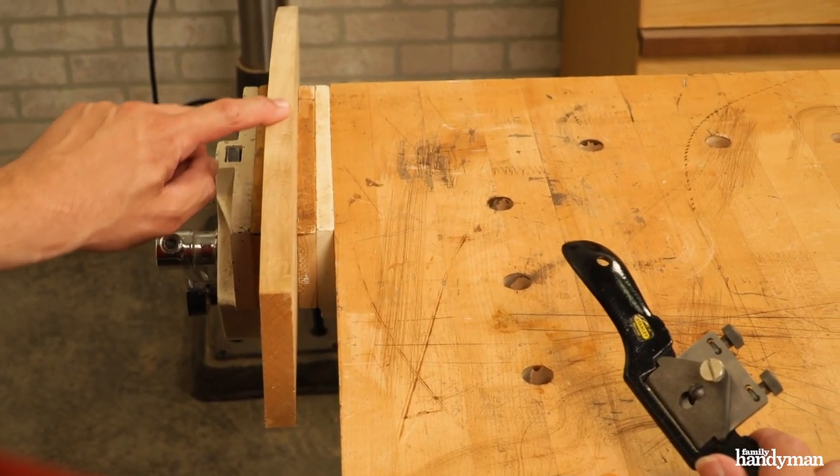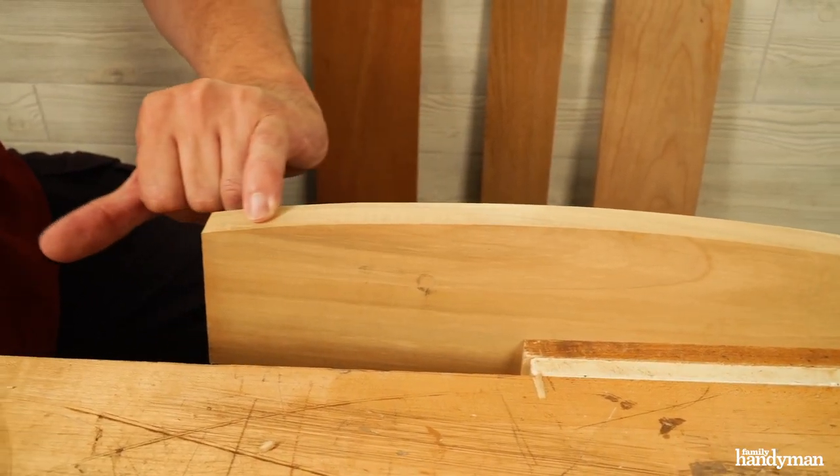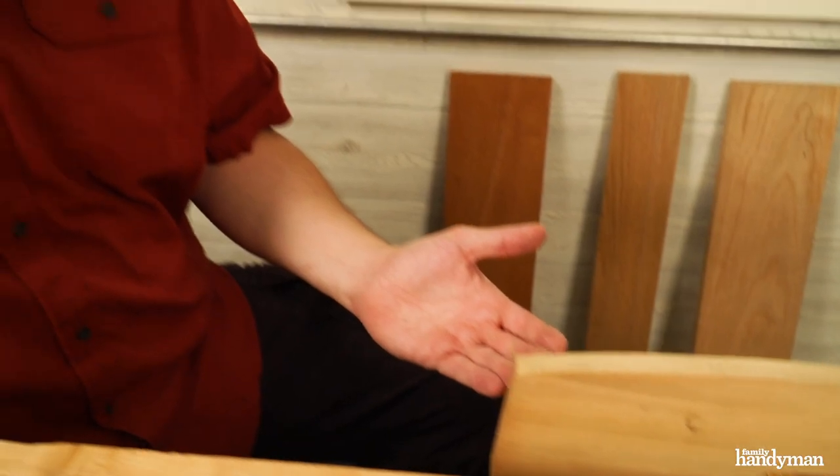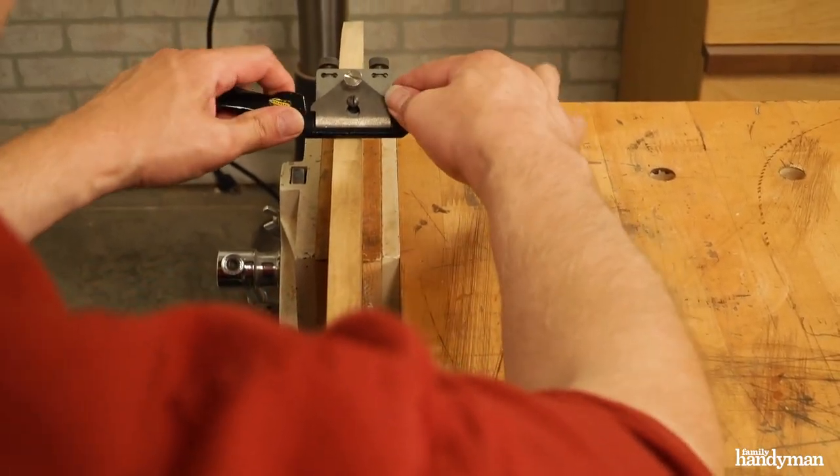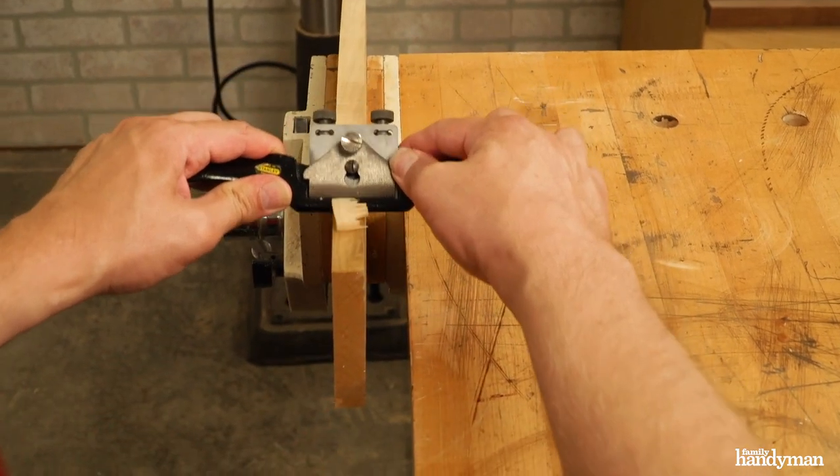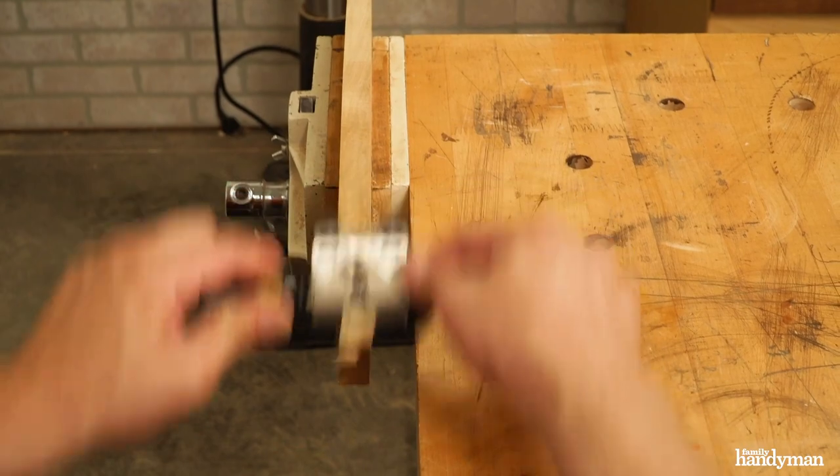Let's say I've cut a curve with a bandsaw and I've got these marks on this edge. Now if I use sandpaper to get rid of them, I actually might make them worse. With a spoke shave, I can come in and make that edge smooth as glass.